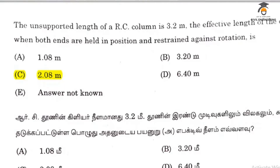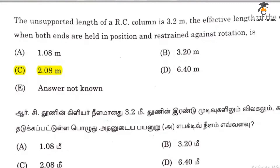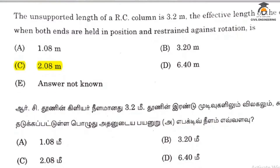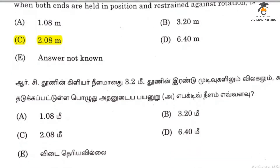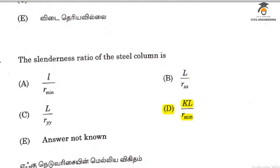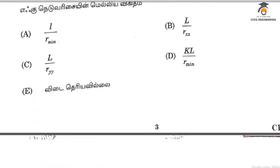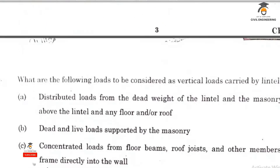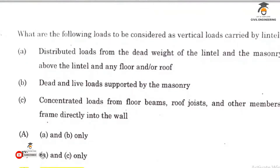The first question answer is 2.08m. The answer to the length of the RC column is 3.2m. The second question is 2.08m. The slenderness ratio of the steel column answer is D. The options are a, b, c, and the answer relates to the vertical load.